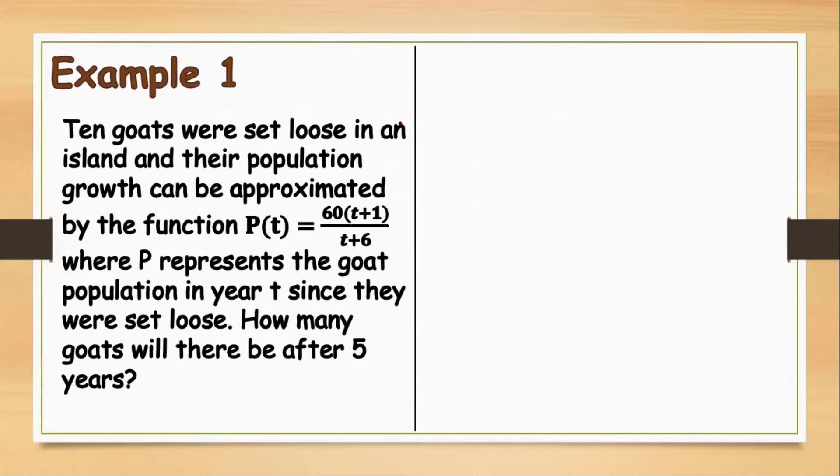So, our solution will be P(T) is equal to 6T. Since our T is given as 5 years, we should substitute 5 into our T. So instead of T plus 1, we'll have 5 plus 1, all over, instead of T plus 6, we'll have 5 plus 6.